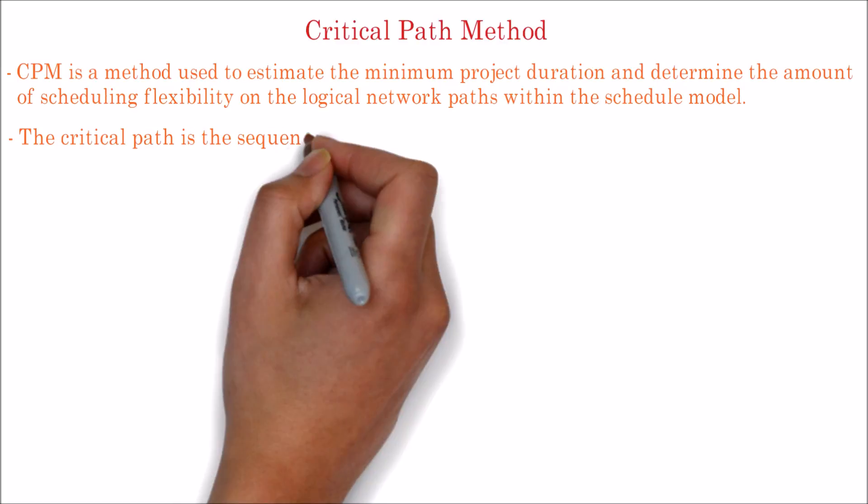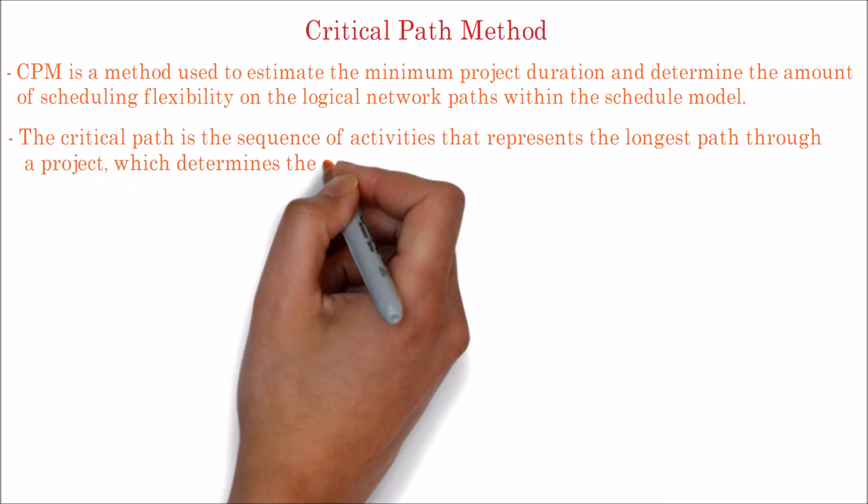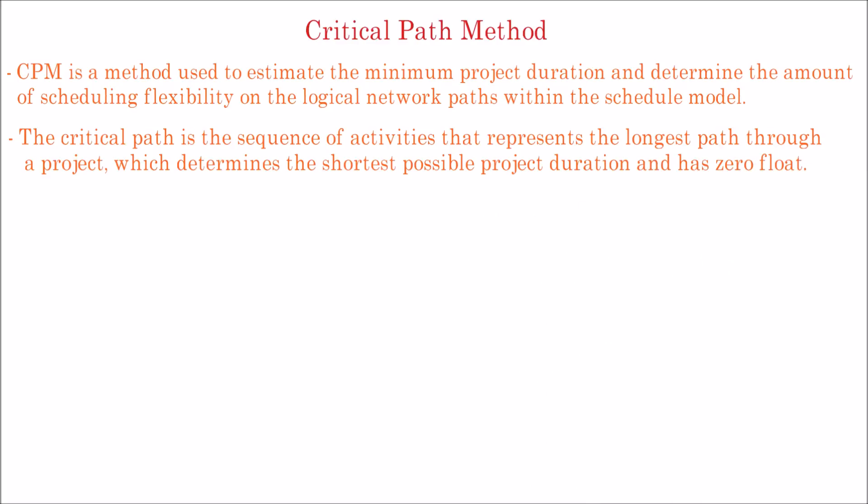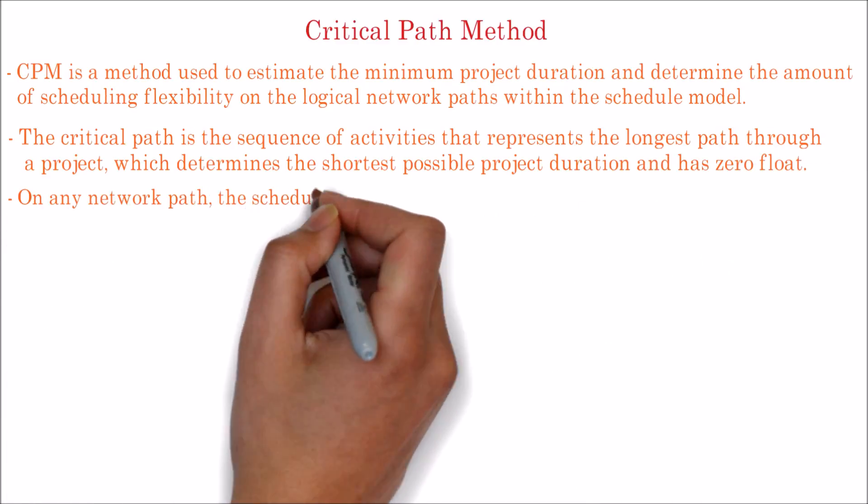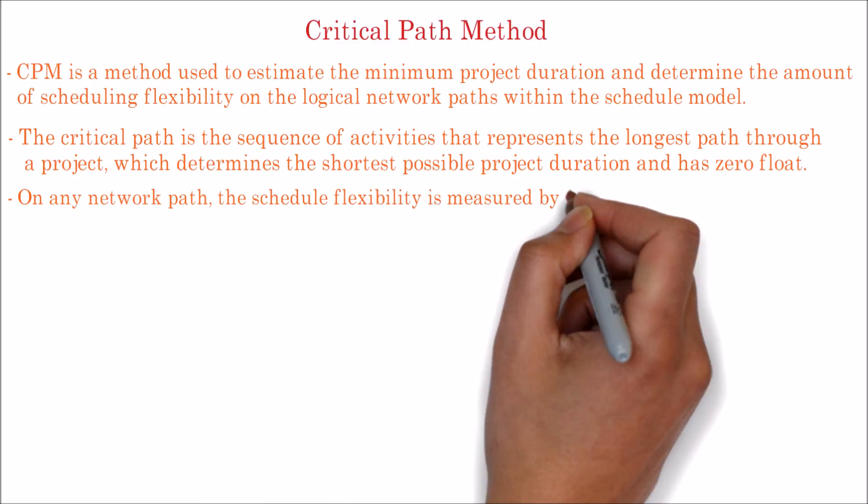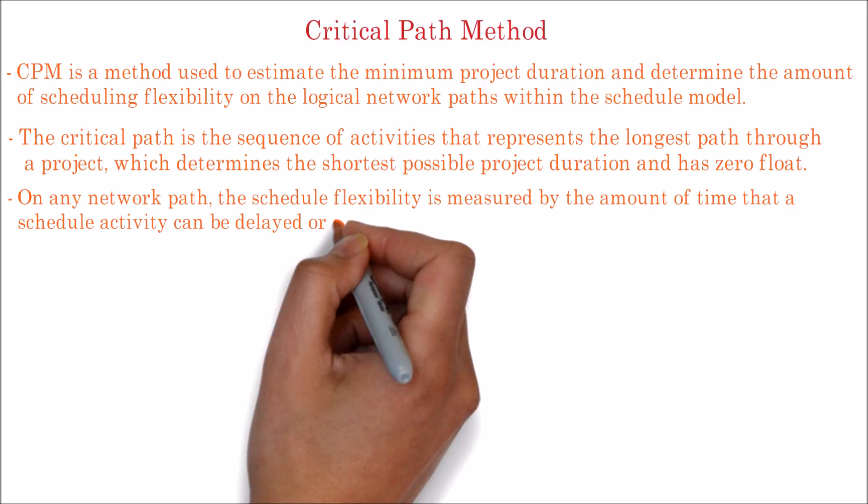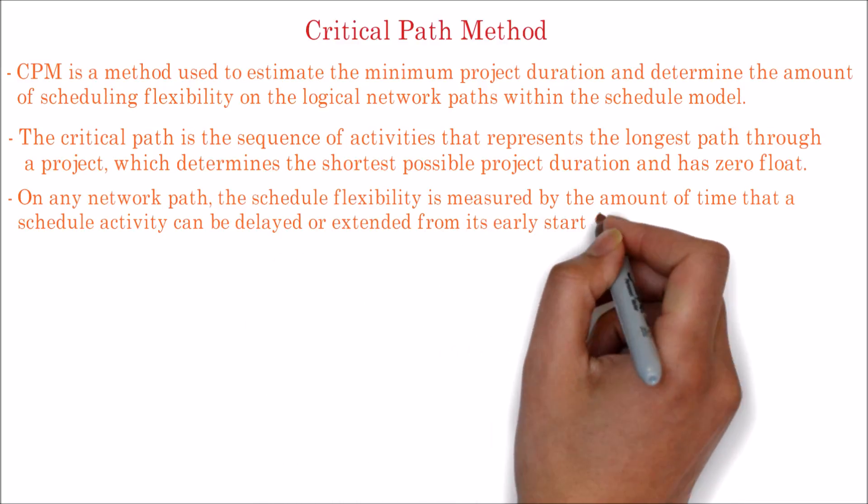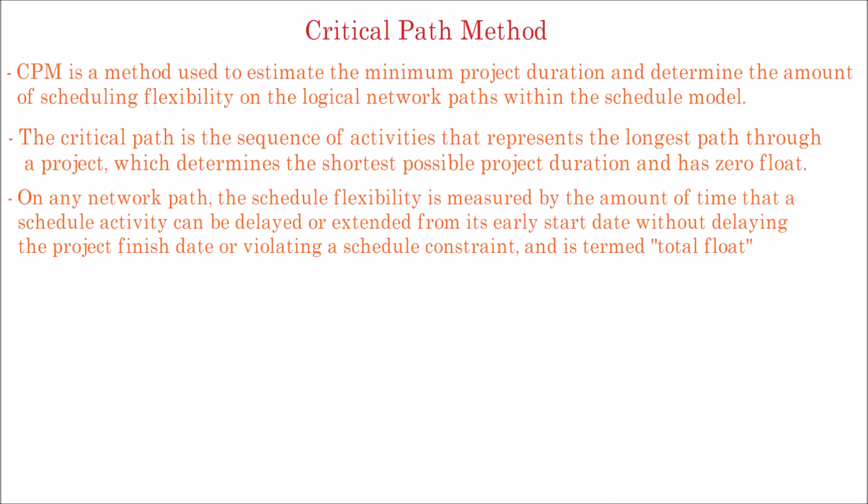The critical path is the sequence of activities that represents the longest path through a project, which determines the shortest possible project duration and has zero float. On any network path, the schedule flexibility is measured by the amount of time that a schedule activity can be delayed or extended from its early start date without delaying the project finish date or violating a schedule constraint, and is termed total float.